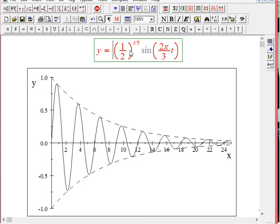Yeah, here we are. Y equals one half to the t over five. That guarantees that it goes down by 50%, a factor of a half every five seconds. Sine of two pi over three times t. There's a nice prettier picture than I can draw of that.